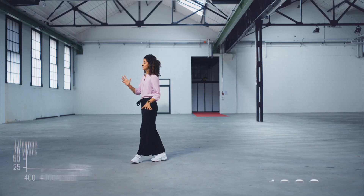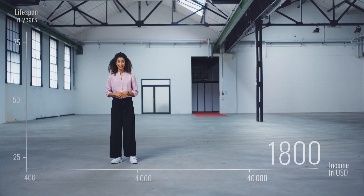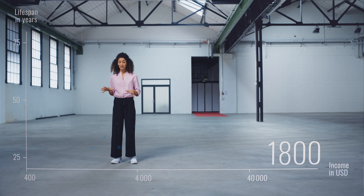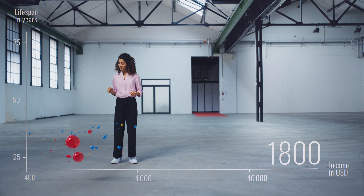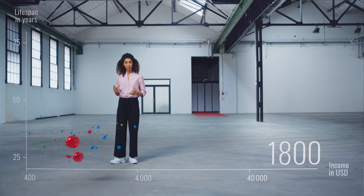Income and life expectancy form the two axes, and the bubbles represent the different countries. European countries are in blue, Asia in red, the Americas in yellow and Africa in green. The size of the bubble reflects the size of the population.